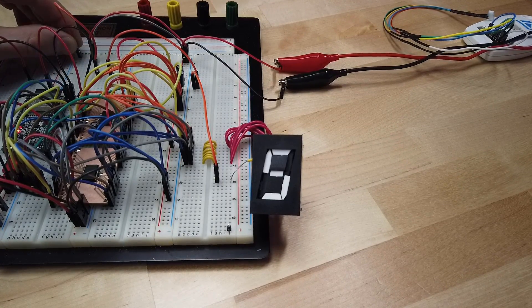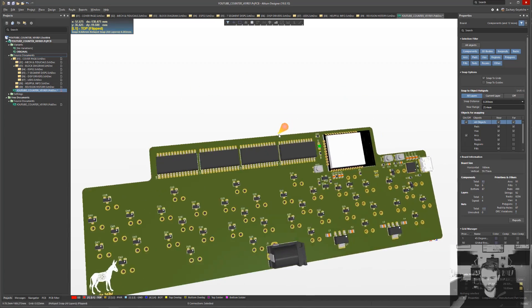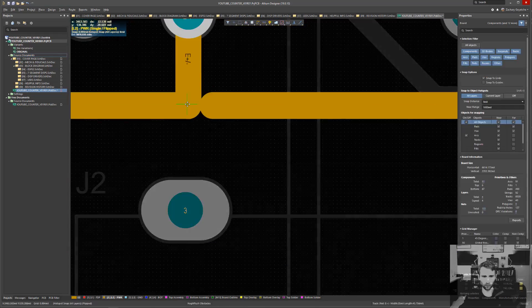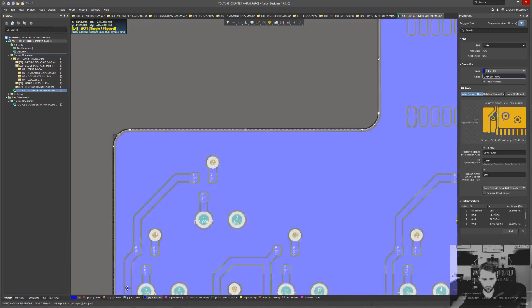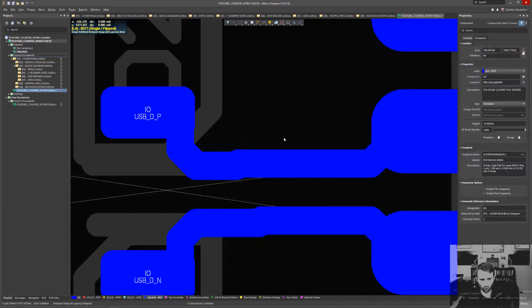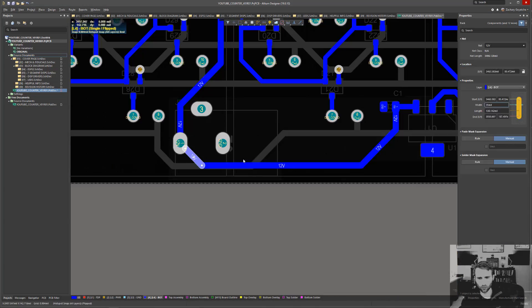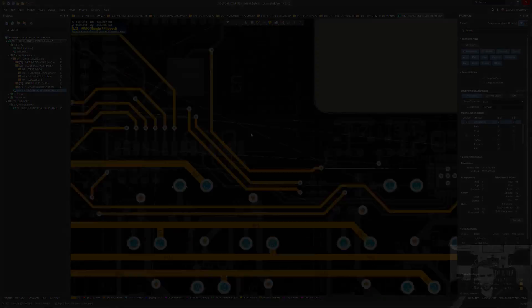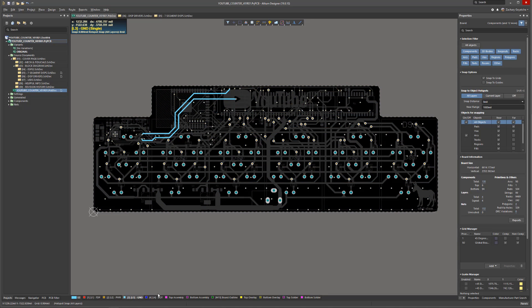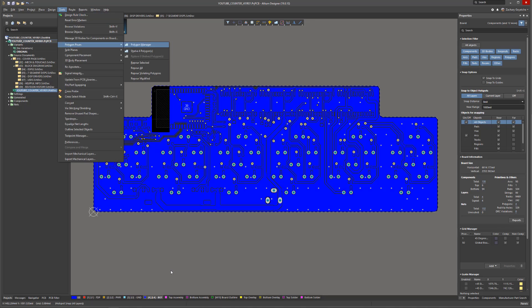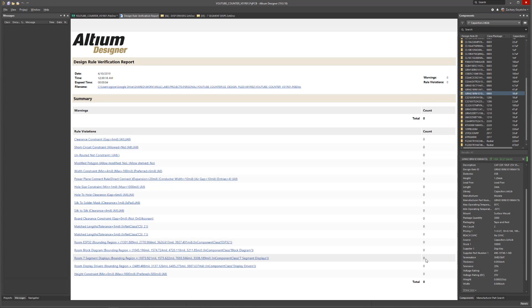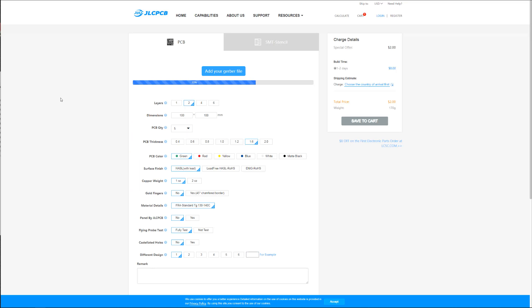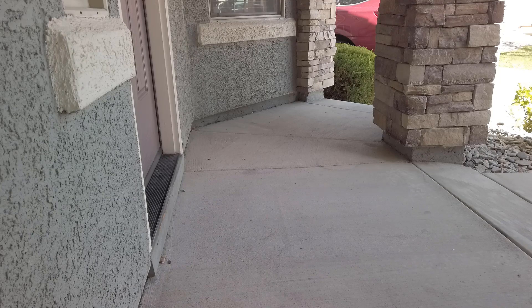I've already done the schematic entry and component placement. All that's left to do now is route the board. The routing is now complete. I ended up using four layers for this board. Now all that's left to do is flood the polygon pours, do one more design rule check, and generate the Gerber files. I'll zip up all the Gerbers, upload them to the fab, and then wait for a box to appear on my porch.